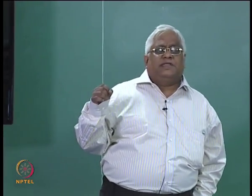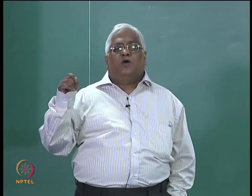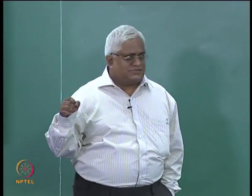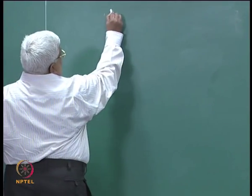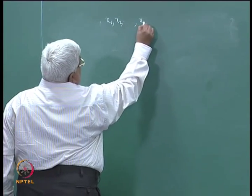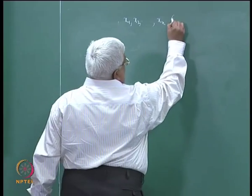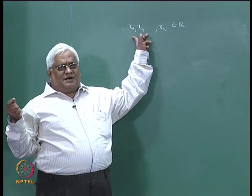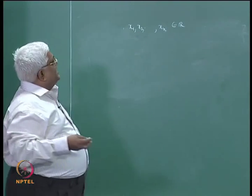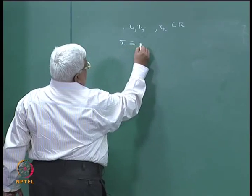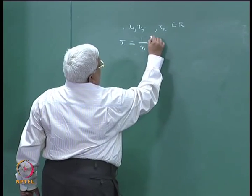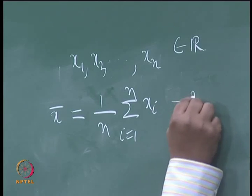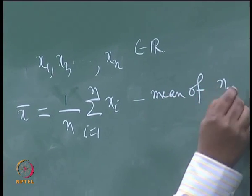If you have n observations x1, x2, ..., xn — these are points in R, meaning n values on the real line — then the mean of these n values, x-bar, equals 1 over n times the summation from i equals 1 to n of x_i. This is the mean of the n observations.